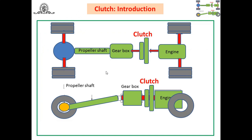In the figure, you can observe where a clutch is used. We have already discussed the meaning of a clutch, its different classifications, single plate clutch, multi-plate clutch, and their transmission capacities based on different theories. In today's session, we focus on uniform wear theory and uniform pressure theory. The clutch is located between the engine and the gearbox in a vehicle.